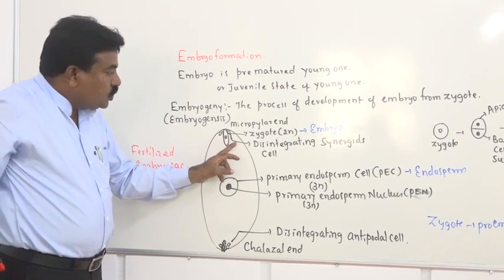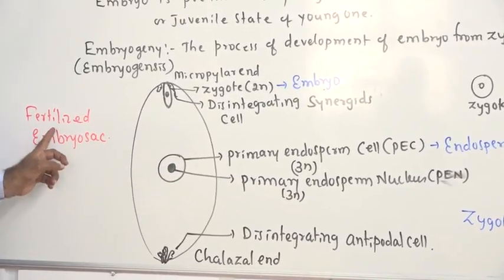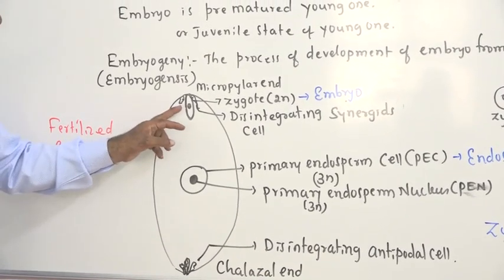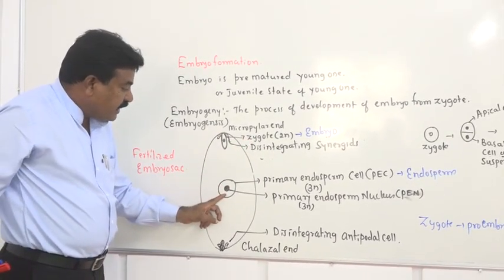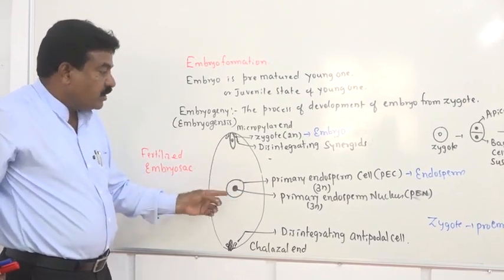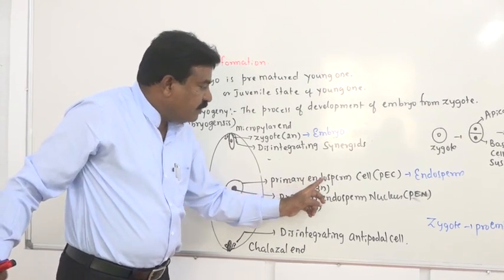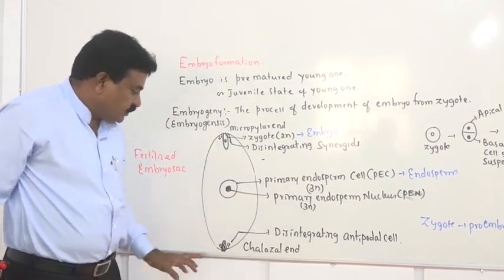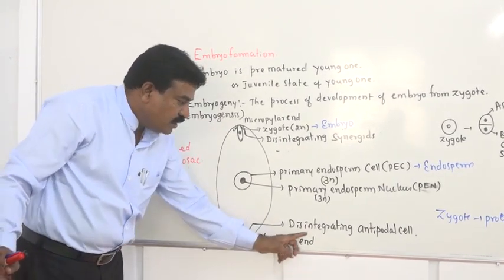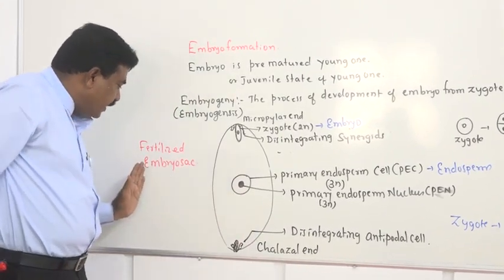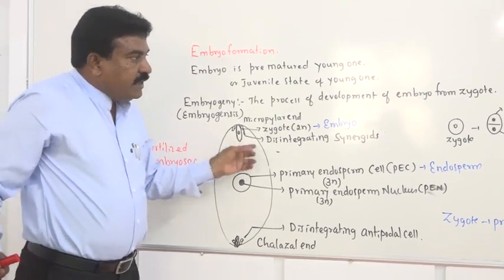When sketching and labeling the embryo sac, the structure and labels are slightly modified. Instead of zygote, label egg; label two synergids, polar nuclei with central cell, and antipodal cells. In a fertilized embryo sac, the labels change: disintegrating synergids are shown, zygote replaces egg, and the central cell becomes the primary endosperm cell, with polar nuclei becoming PEN. The antipodal cells in the fertilized embryo sac undergo disintegration.